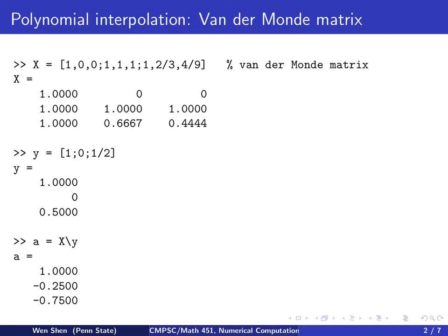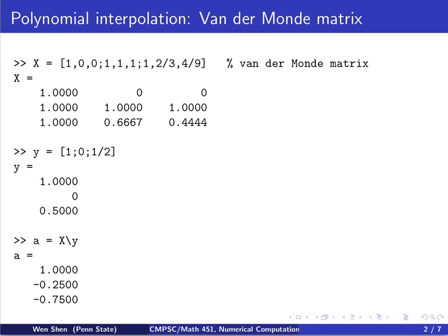This is an example we went through in class where our interpolation data is x0 is 0, x1 is 1, and x2 is 2/3. So you can just type in the Van der Monde matrix here. First column is 1, 1, 1. The second is your x, so 0, 1, 2/3. And the third one is x squared, so 0, 1, and 2/3 squared, that's 4/9.